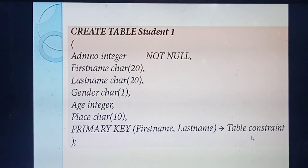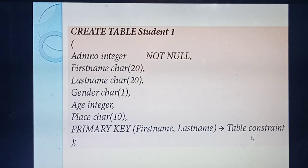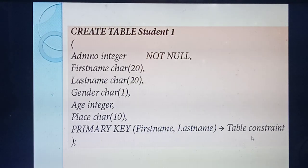Table constraint means you are applying constraints or conditions for more than one field of a table. The constraint is specified at the end of the table. Now recall all four types: Unique constraint — no two rows have the same value; Primary Key constraint — uniquely identify a record; Default constraint — assigns default values; Check constraint — checks a condition; Table constraint — applied for more than one field.